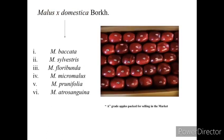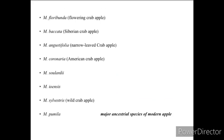There are various species of apple like Baccata, Silvestris, Floribunda, Micromelus, Prunifolia, and Atrosanguinea. Floribunda is known as Flowering Crab Apple, Baccata is known as Siberian Crab Apple, Angustifolia is known as Narrow-leaved Crab Apple, Coronaria is known as American Crab Apple, Silvestris is known as Wild Crab Apple. Pumila is a major ancestral species of modern apple.